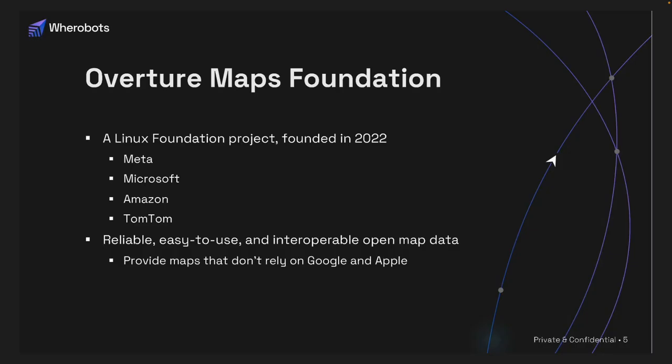Now let's talk about Overture Maps. OMF is a Linux Foundation project, founded in 2022 — a joint effort of Microsoft, Amazon, and TomTom. The vision of OMF is to provide reliable, easy-to-use, and interoperable open map data to help people access maps that don't rely on Google and Apple.